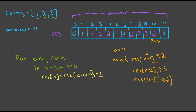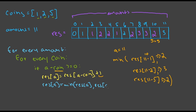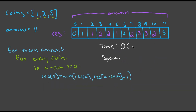Now we can finish our pseudocode. We iterate through every amount, and for every amount we check every coin, then we find the min to determine what result at 'a' should be. We rewrite it as: result at 'a' equals the min between our current result — because maybe we already found the min — or result at 'a minus coin' plus one. The time complexity is O(amount × coins), because we iterate through every amount and every coin per amount. For space, it's O(amount), because we only need to store each amount in an array.